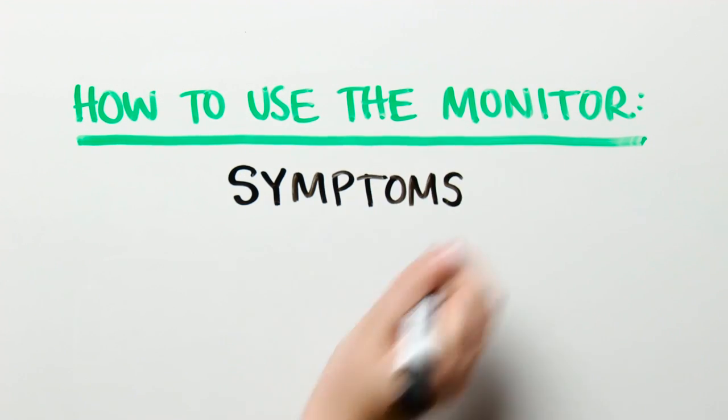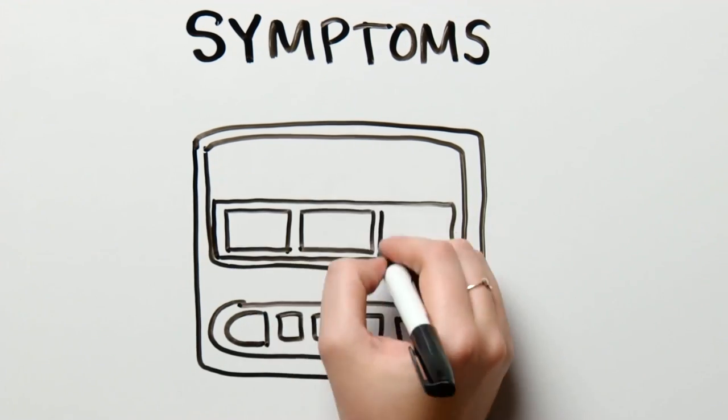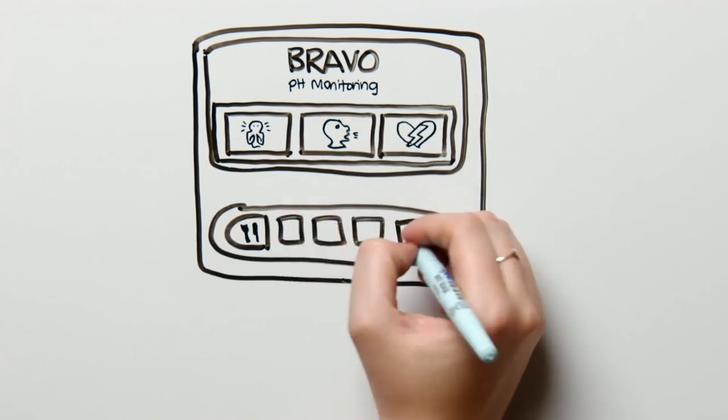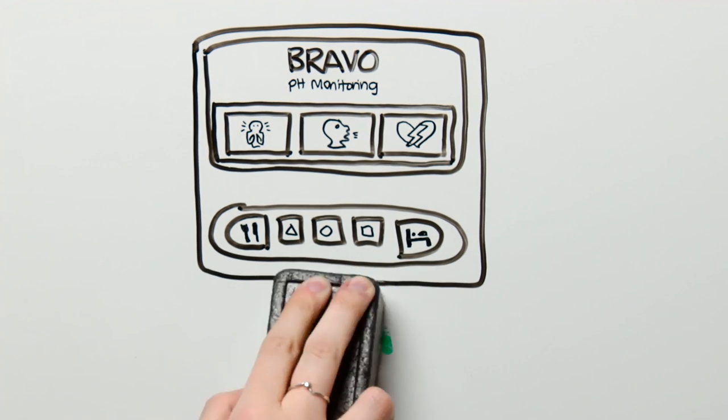Now let's move on to how to record your symptoms. This works the same way as the sleeping and meals modes do, except you will not have a start and stop time. Symptoms such as heartburn or regurgitation will only have a wake up to the monitor and a one-time push.